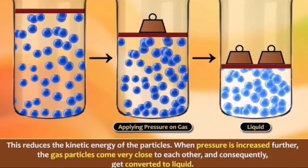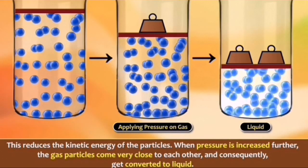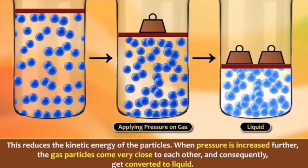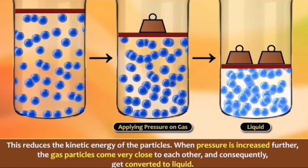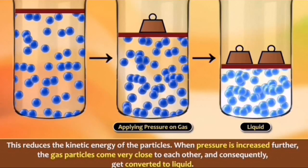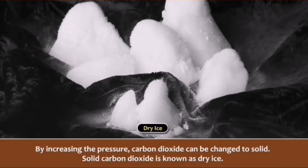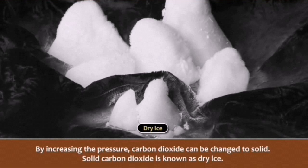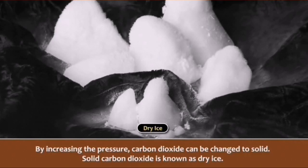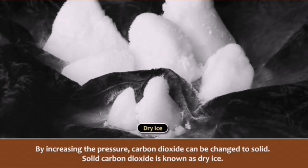When pressure is increased further, the gas particles come very close to each other and consequently get converted to liquid. On again increasing the pressure, we can convert liquid into solid. For example, by applying pressure, we can convert gaseous carbon dioxide into solid carbon dioxide. Solid carbon dioxide is known as dry ice.